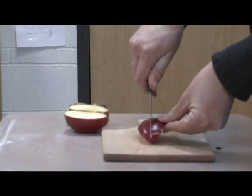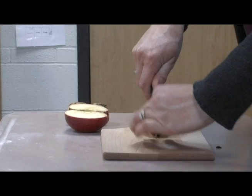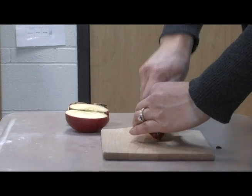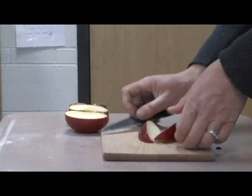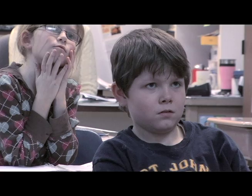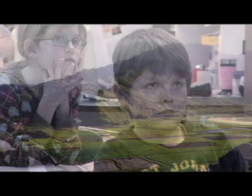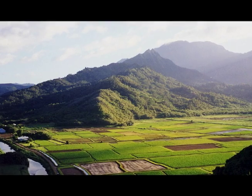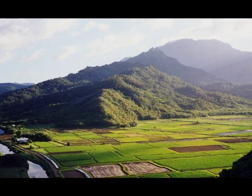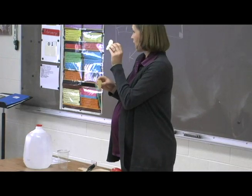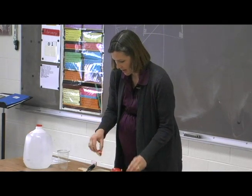Let's think about our land here for a minute. I'm going to cut this in half. Now we have two parts. This part is going to be the part that's our mountains and our deserts, and we have a lot of land that's covered in ice. So we can't grow food here, and we'll set that aside.